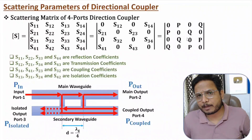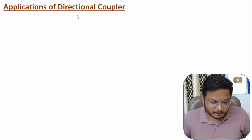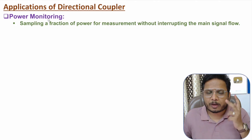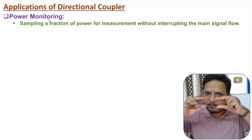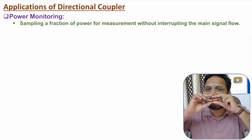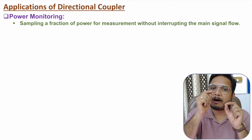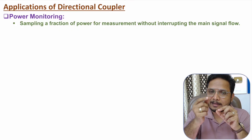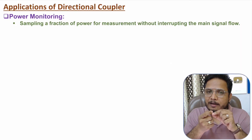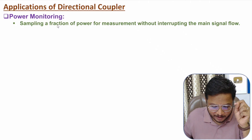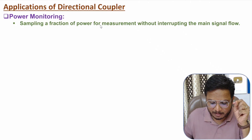Now let me discuss the applications of the directional coupler. The first application is power monitoring. If you have a main waveguide and you don't want to disturb its signal, but you want to measure how much power is present, you can take a fractional sample of the power and monitor that fraction only — allowing measurement without interrupting the main signal flow.